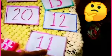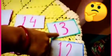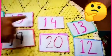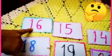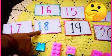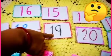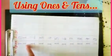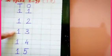Let's count. 11, 12, 14, 15, 16, 17, 18, 19, 20. 1 1 11, 1 2 12, 1 3 13, 1 4 14, 1 5 15, 1 6 16, 1 7 17, 1 8 18, 1 9 19, 2 0 20.